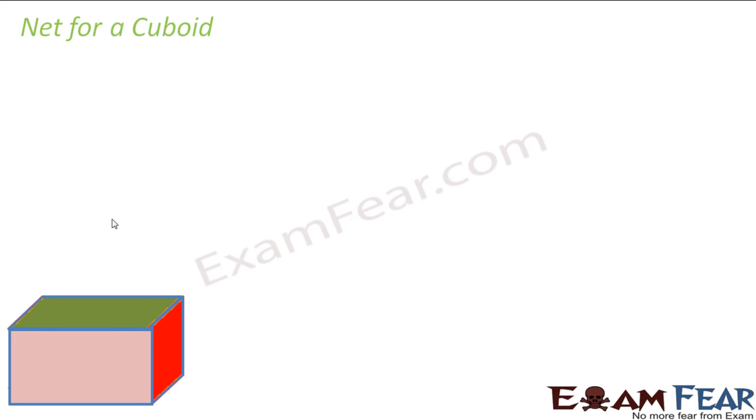Now in a similar way, let us look at the net for a cuboid. Because cube and cuboid are similar to some extent - they both have six surfaces. But the only difference is that in cube, all the surfaces are squares. But in cuboid, you have rectangles as their surfaces. So how many surfaces do you have total in a cuboid? Here also you have six surfaces, but all the sides are not equal. So you actually have rectangular surfaces as well.